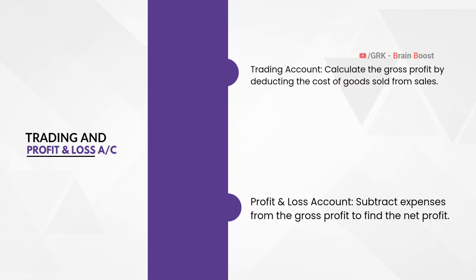Here we don't have enough data to fully capture in the trading and P&L account, but let's understand what the trading account and profit and loss account involve. In the trading account, we calculate the gross profit by deducting the cost of goods from sales. In the profit and loss account, we subtract all expenses from the gross profit to find out the net profit. In our upcoming videos we will have a clear session on calculating gross profit and net profit.